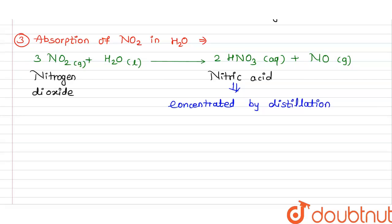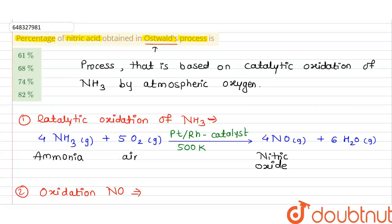By distillation, the nitric acid is concentrated up to 68 percent. So in the Ostwald process, we obtain 68 percent nitric acid. This corresponds to the second option, which is the correct answer. The final nitric acid product is concentrated to 68 percent via distillation.